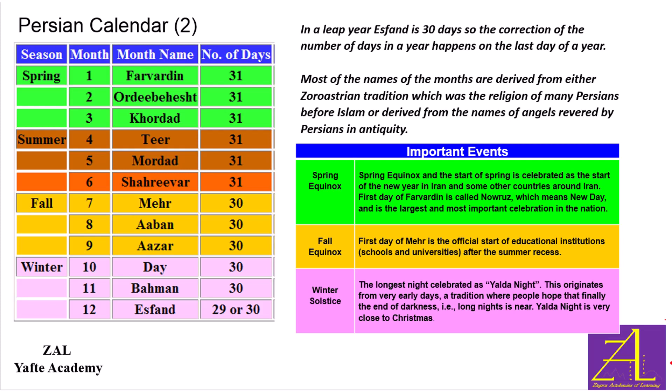The first six months of the year are each 31 days, the next five months are 30 days each, and the last month of the year is 29 days — adjusted for a leap year, in which case it becomes 30 days. In the US, we make this adjustment in February.